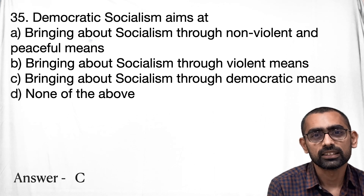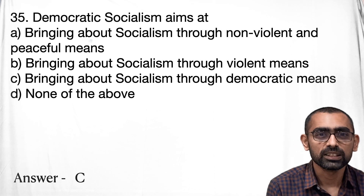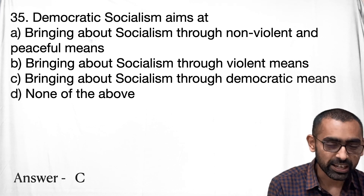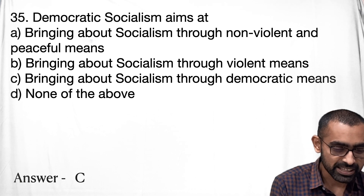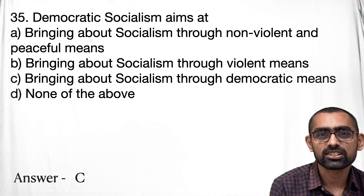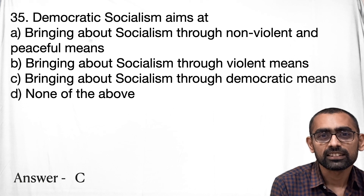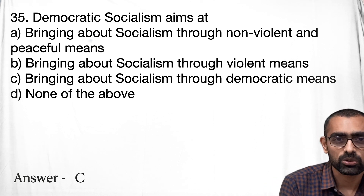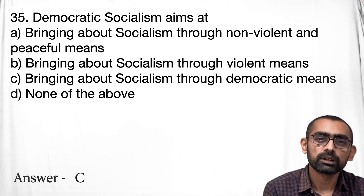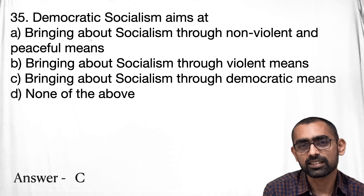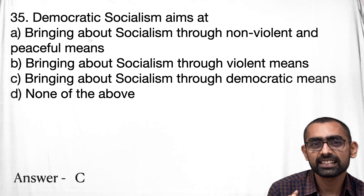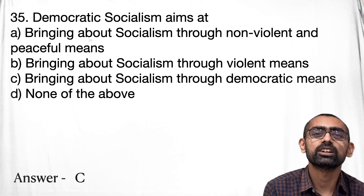Question number 35 is about democratic socialism. The word itself explains the meaning — if we are going with democratic socialism, it cannot be through violent means. Option C is directly the breakdown of the words: socialism is a system of community ownership, and if that can be achieved in a democratic way, that is democratic socialism. So by common sense application, the answer will be C. You must understand all these ideologies and jargons when reading Indian polity, so that any related question can be answered.